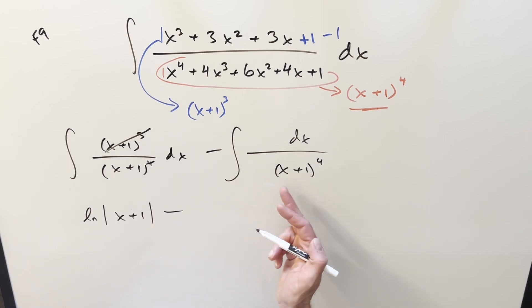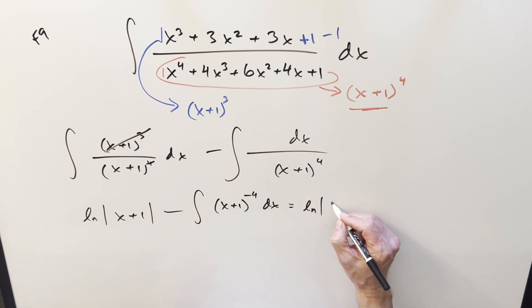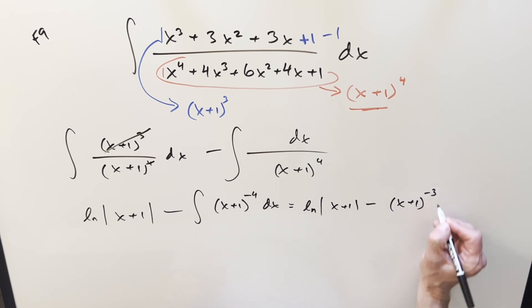For this one, you could do a u-substitution, but it's not necessary because we can just do power rule. We don't do the u-substitution just because the derivative of this is going to be 1. So what's going to happen with power rule when we integrate? We'll have a minus sign. We'll do (x+1)^(-3) over (-3). But then minus signs cancel.